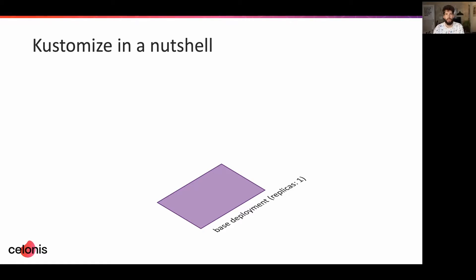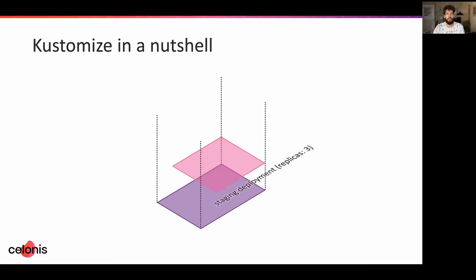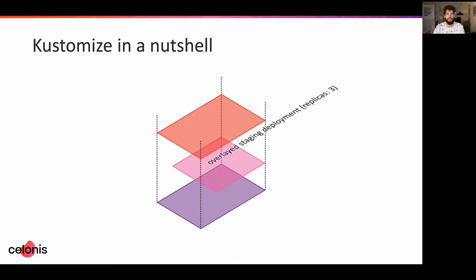For a simple example, imagine a deployment with replica count 1. For our staging environment, we want to bump the number of replicas to 3, so we define this and only this in an overlay. When we render the manifest using Kustomize, we get the deployment with only the replica count changed to 3. Those patches can be defined in a different directory, or in a remote location such as a Git repository — which is very useful for what I'm showing you today.